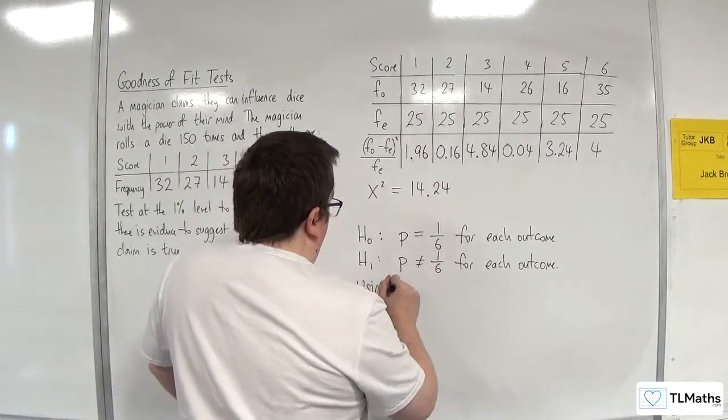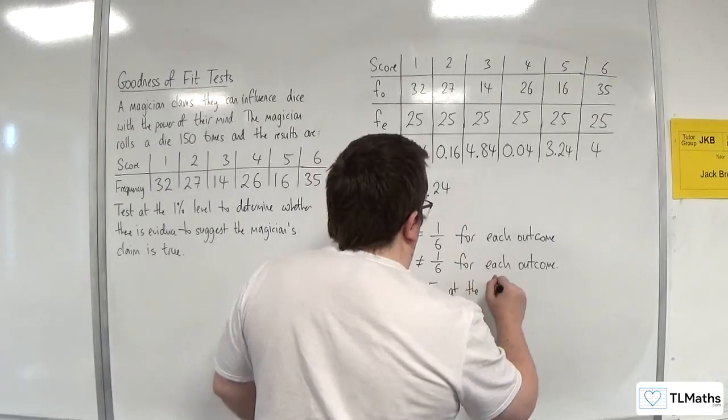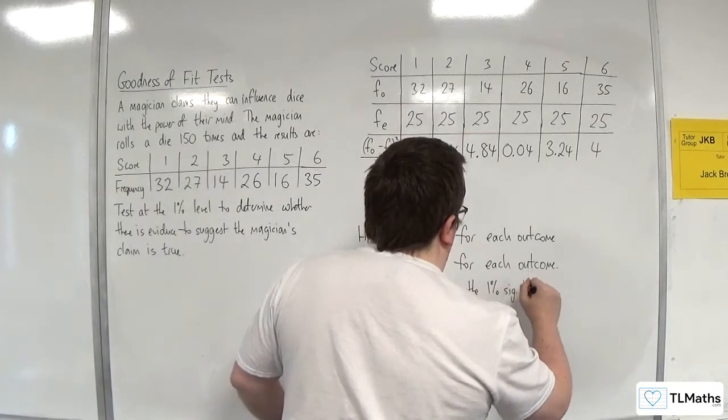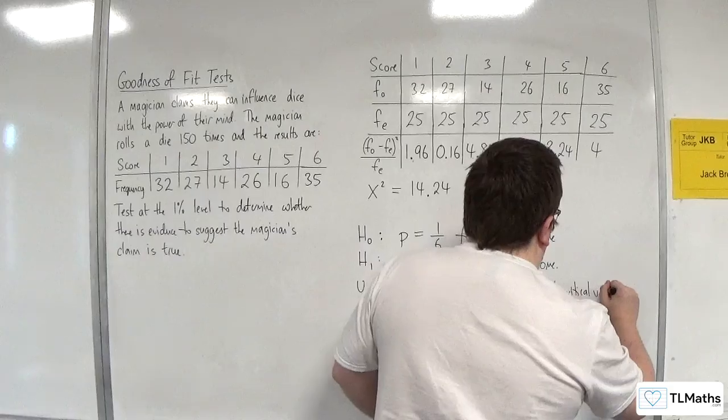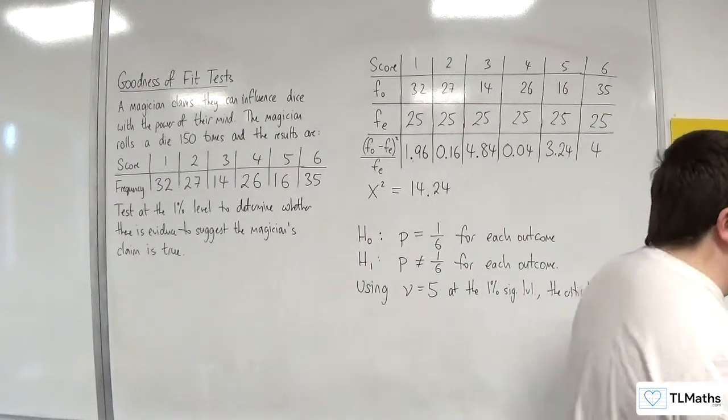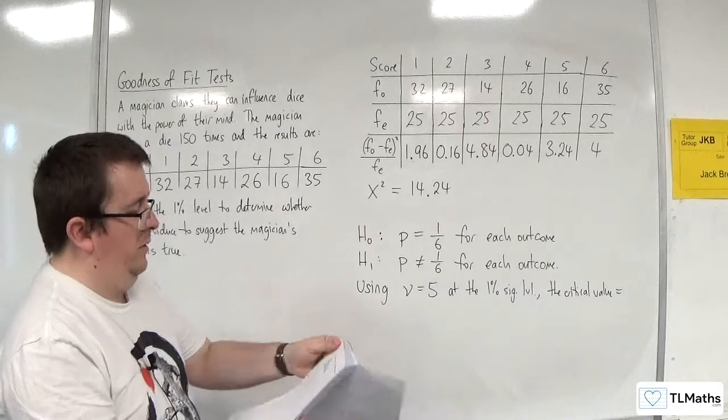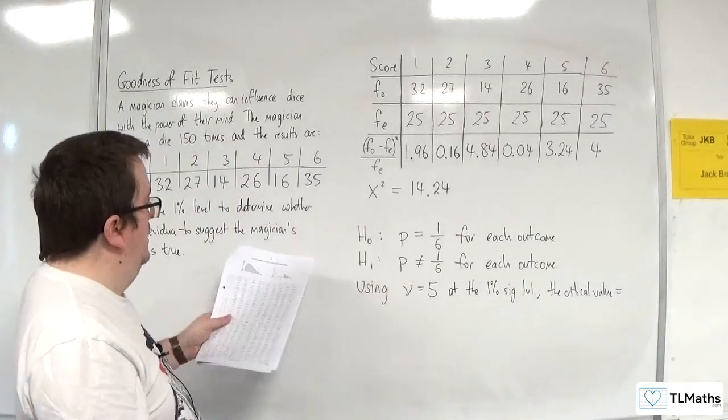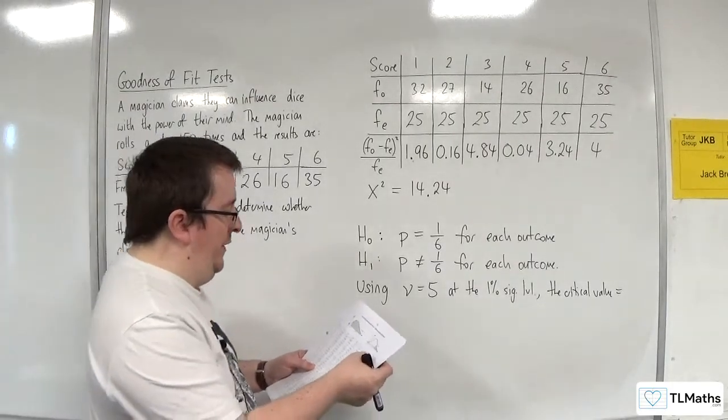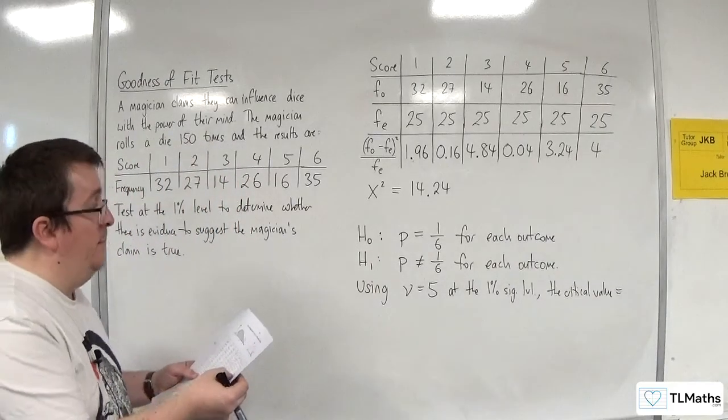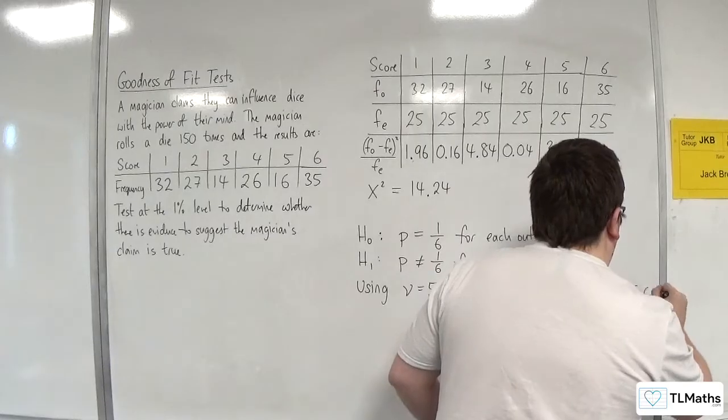So, using nu equals 5 at the 1% significance level, the critical value is... Right. So, for this, we need to go to our statistical tables. Okay, so, chi-squared distribution. This is on page 13 of the OCR-MEI formula booklet. So, we're looking at a 1% significance level. And nu is 5. And we get 15.09.